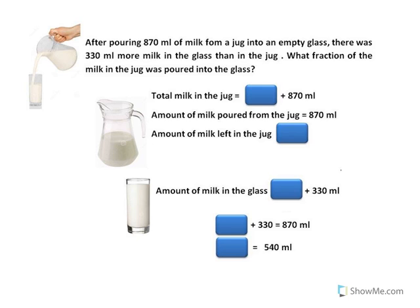So after pouring milk from the jug into the glass, there was more milk in the glass than in the jug, and also the glass was empty. So whatever milk was poured from the jug was inside the glass. So the amount of milk in the glass will be exactly equal to the amount of milk that was poured. Let the total amount of milk in the jug at first be shown by this rectangular unit plus 870 ml. The amount of milk poured from the jug is equal to 870 ml. So the amount of milk left in the jug is this rectangular unit.